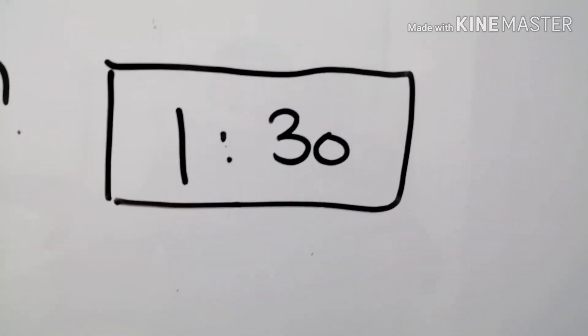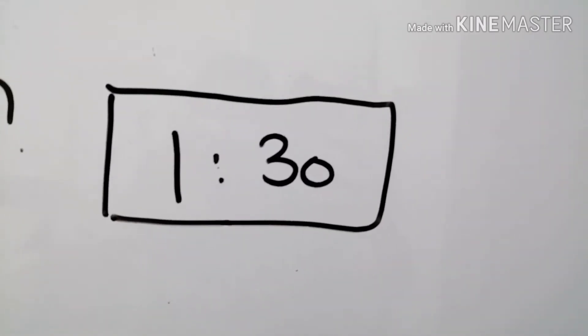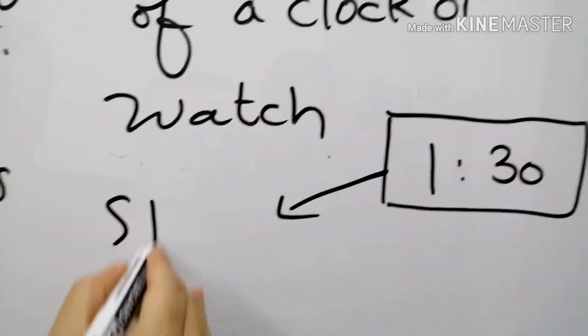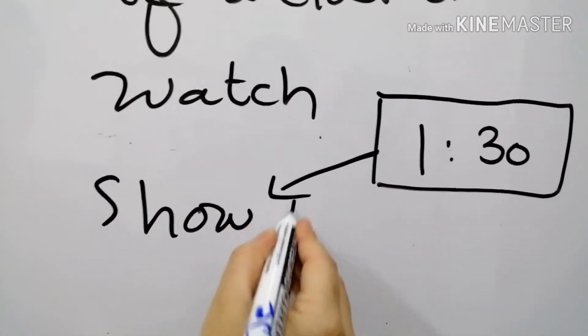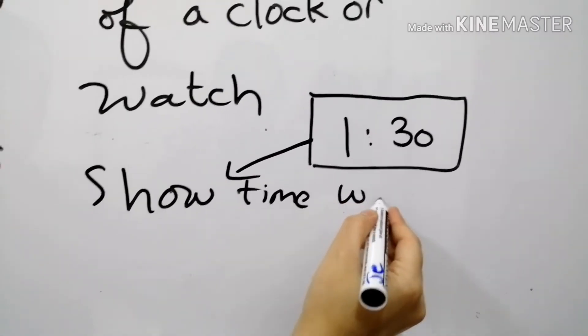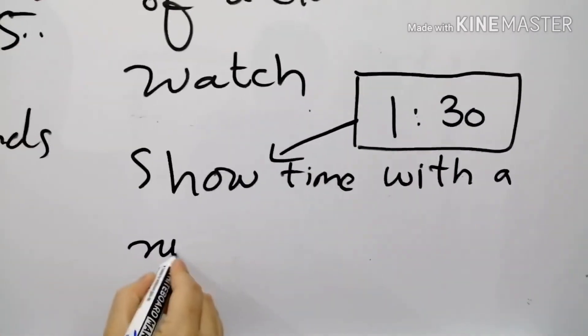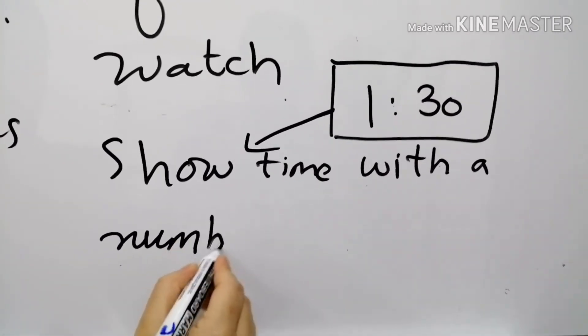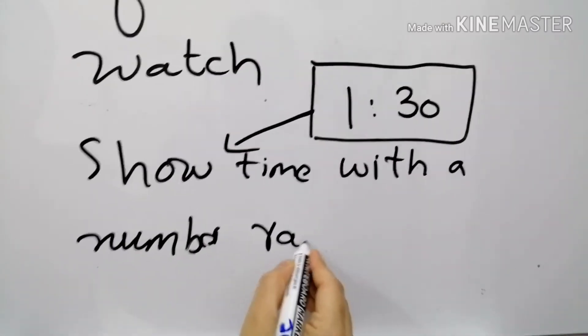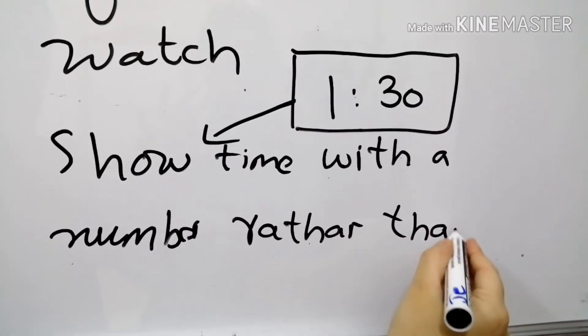So we will see that digital clock shows the time with the number rather than the hands. This clock shows time with the number only, with a number rather than hands. Hands are the needles.